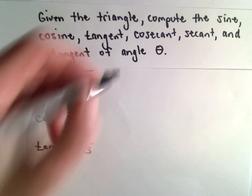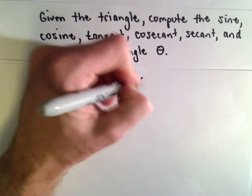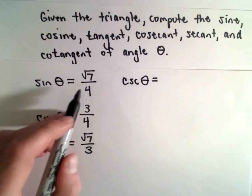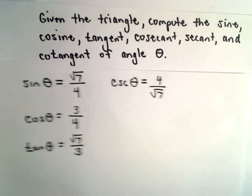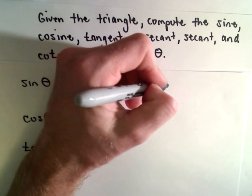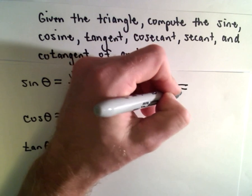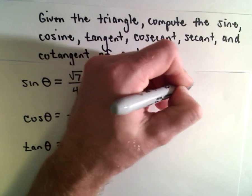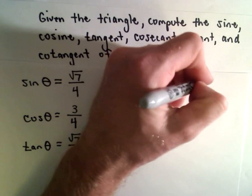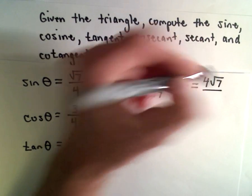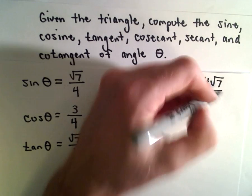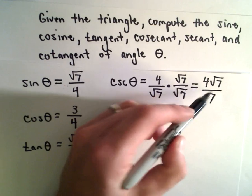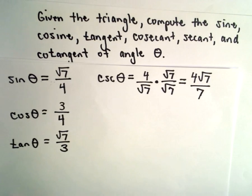So cosecant of theta, that's going to be 4 divided by the square root of 7. Here we're going to rationalize the denominator, so multiply top and bottom by the square root of 7. That'll leave you with 4 times the square root of 7 in the numerator. The square root of 7 times the square root of 7 is just 7. The fraction 4 over 7 doesn't reduce, so that'll be our solution.